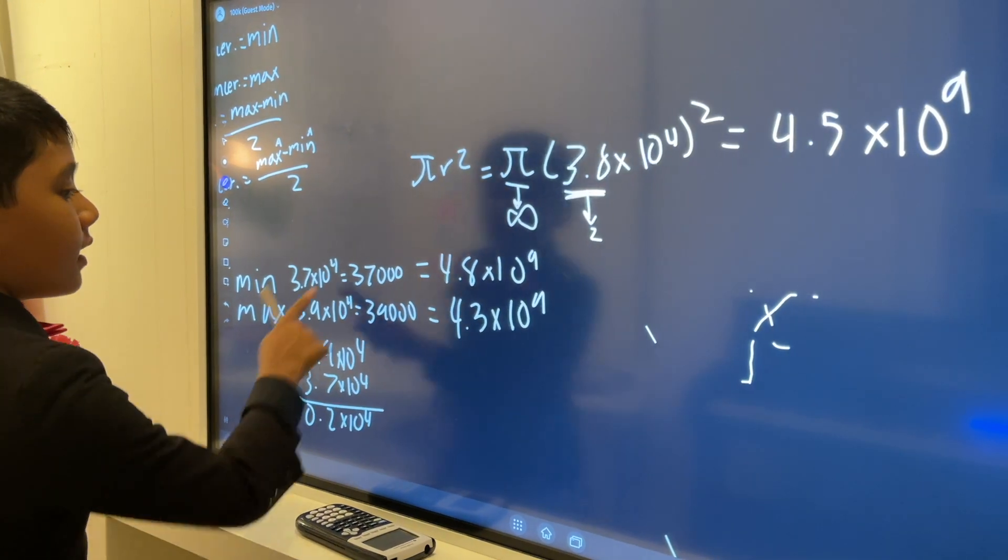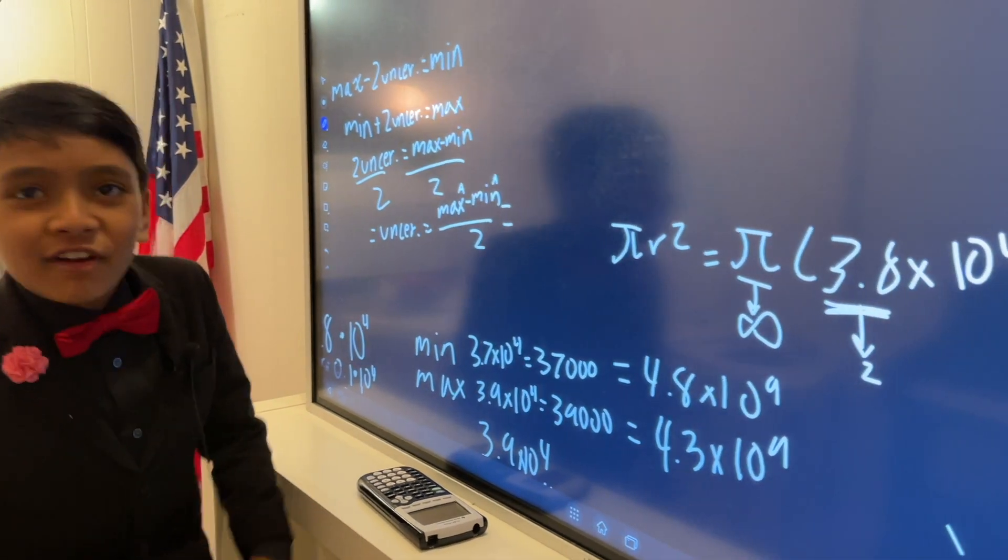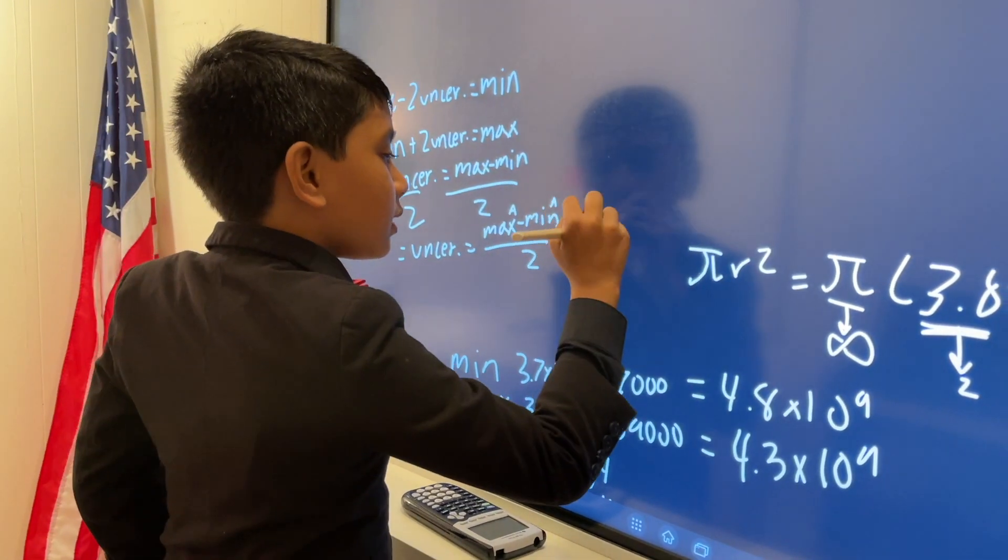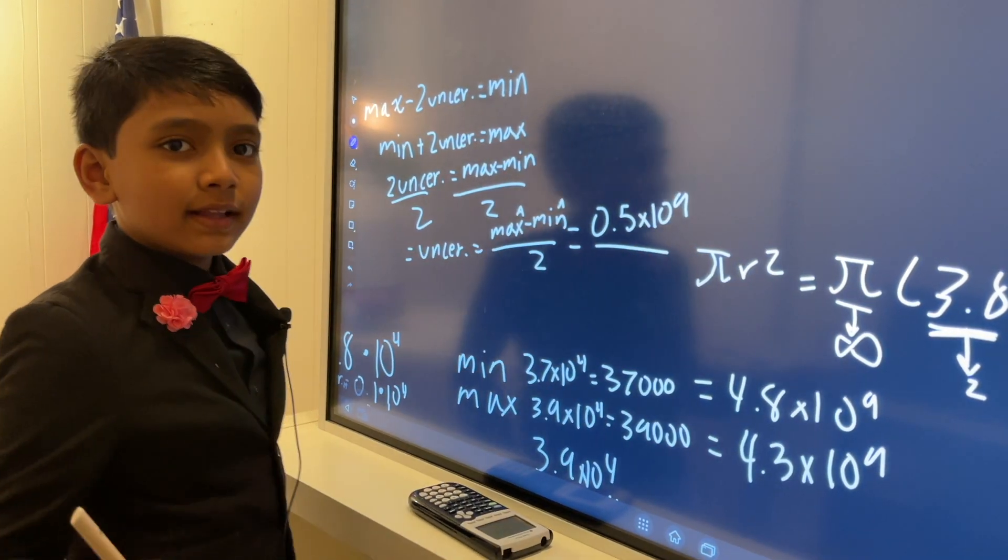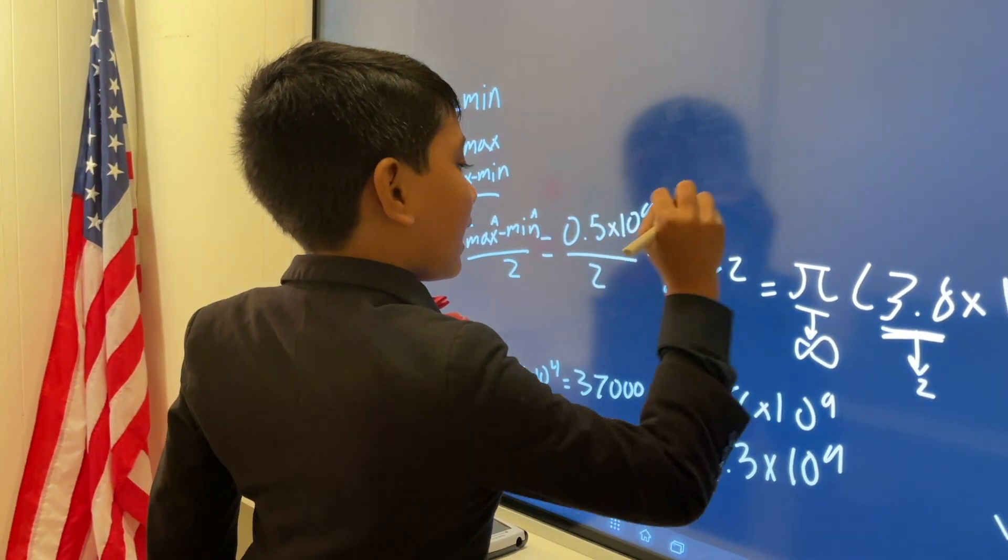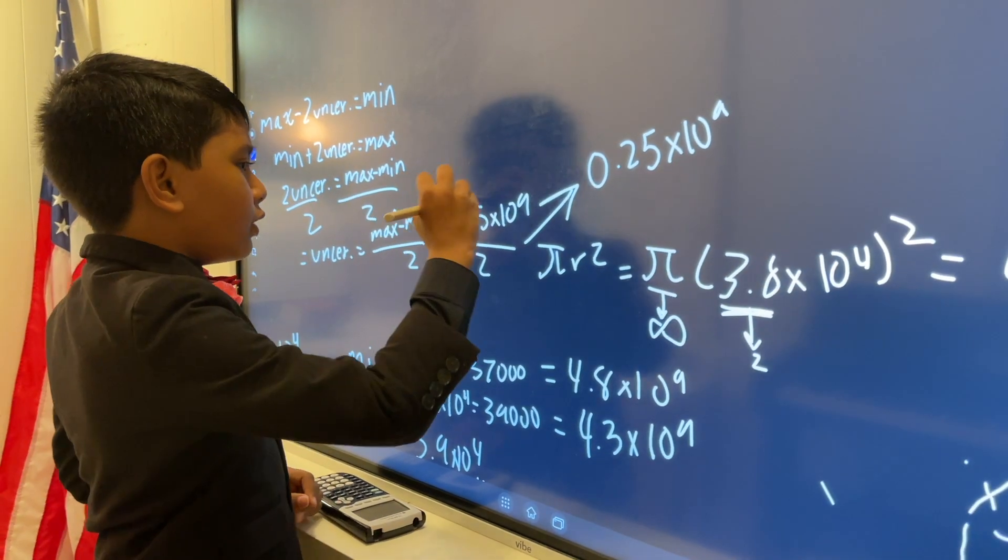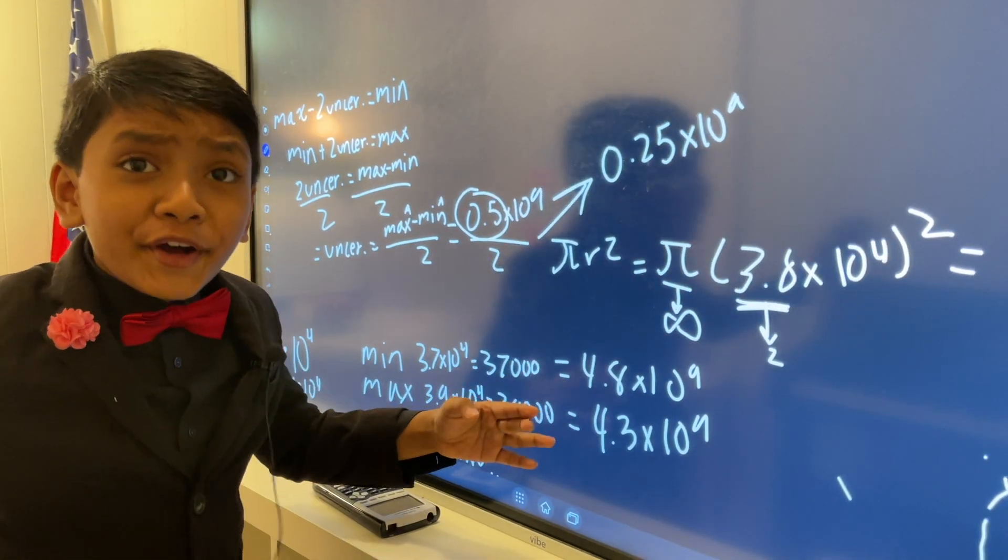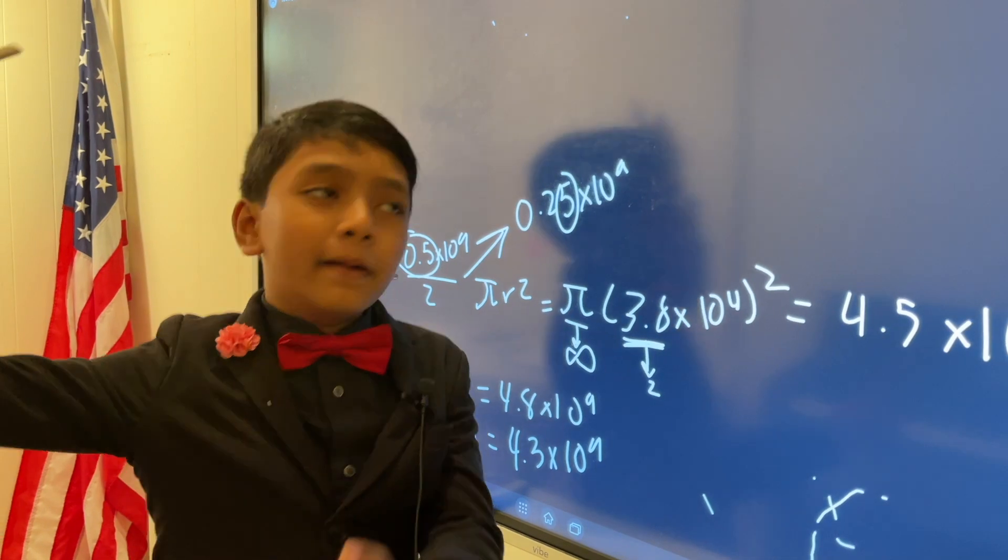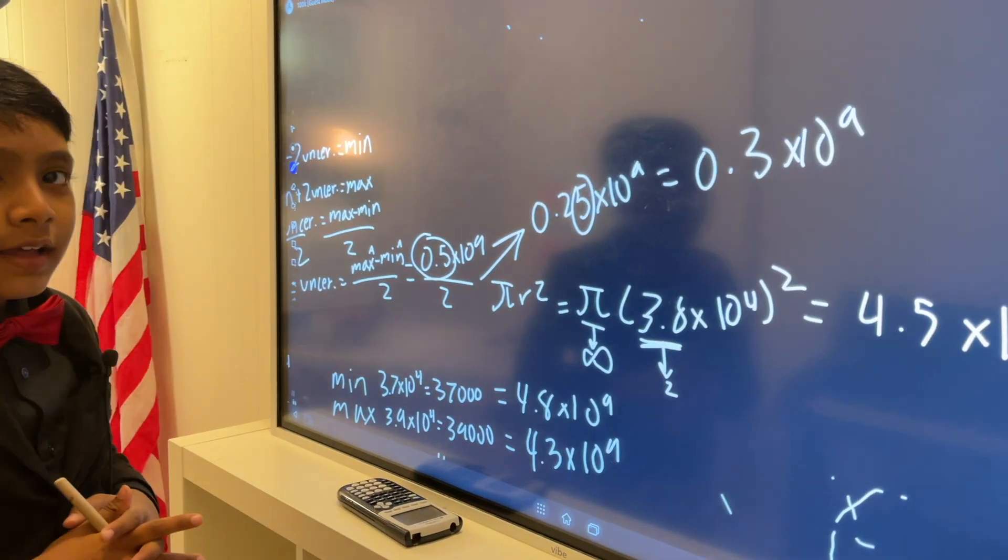Now we just put these into our equation so this gives us 4.8 minus 4.3 over 2. So that's 0.5 times 10 to the 9 also known as 5 times 10 to the 8 and then divided by 2 that gives us 0.25 times 10 to the 9 but WAIT there's only one sig fig here. So that means there must only be one sig fig here and if it's 5 or higher round up and that gives you 0.3 times 10 to the 9.